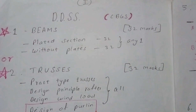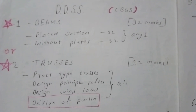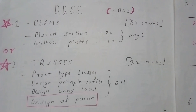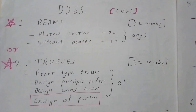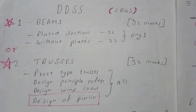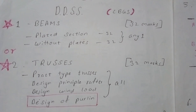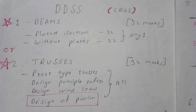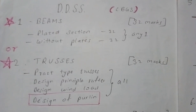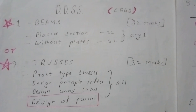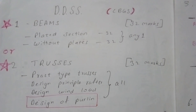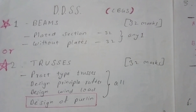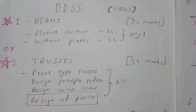There is also an option for the first question: Trusses. This also carries 32 marks. These two — Beams and Trusses — are options for the first question, so you must do any one of them. If you choose Beams, neglect Trusses, and vice versa.